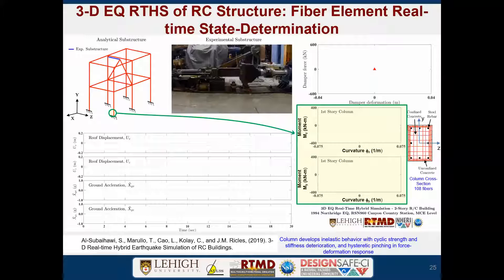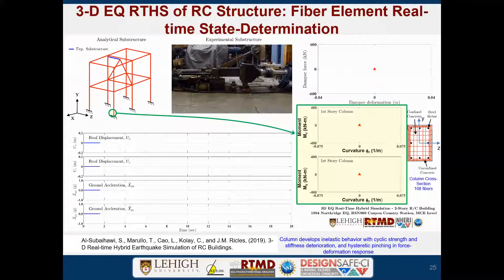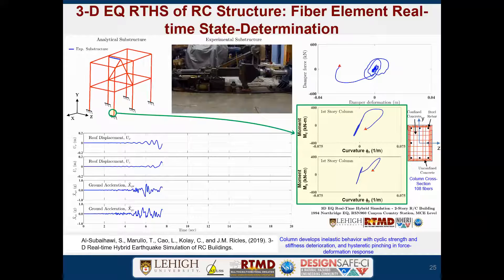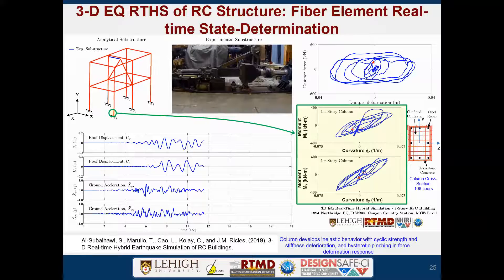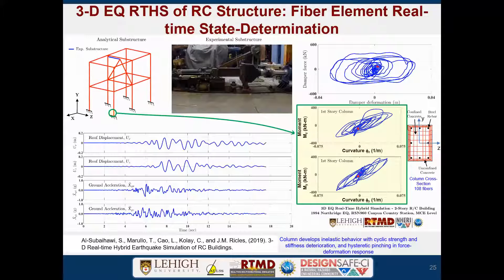Let me show this in real time. This is a two-story, bidirectionally loaded moment frame in reinforced concrete, with a column element discretized with 108 fibers. The highlighted part shows the moment frame loaded bidirectionally. There was a damper in this structure — that's the experimental substructure, shown in the photograph. The damper motion is shown in the upper right, and there's evidence of nonlinearities because the shape is not elliptical. That's the illustration of real-time hybrid simulation.